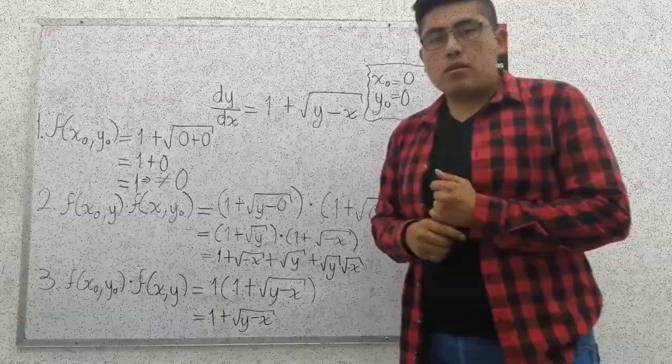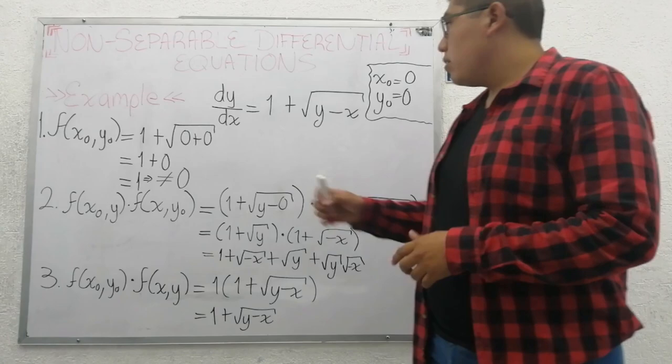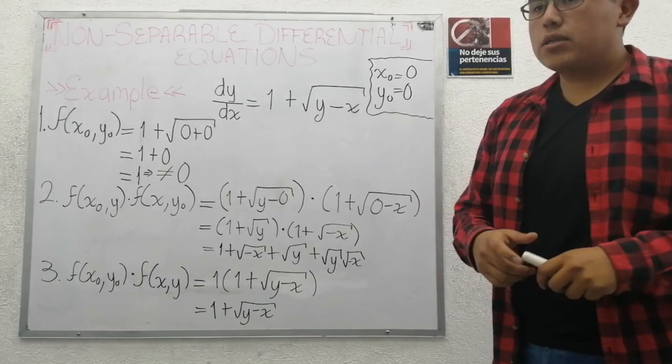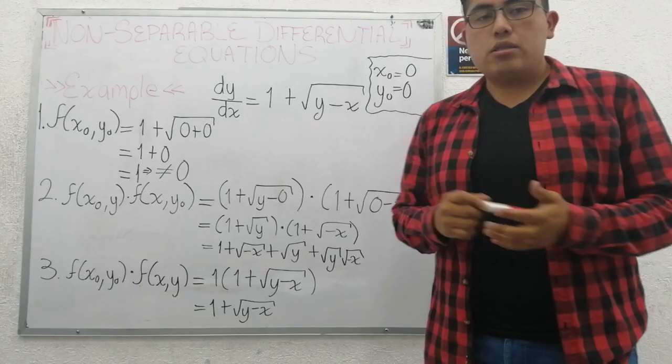We have this differential equation: dy over dx equals 1 plus square root of y minus x. First, we check if this equation is separable or not with the previous steps.